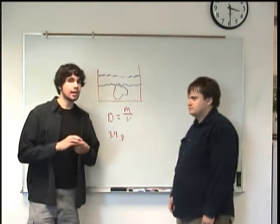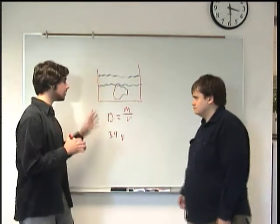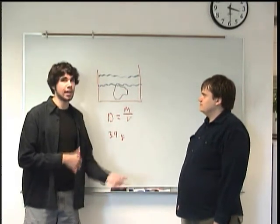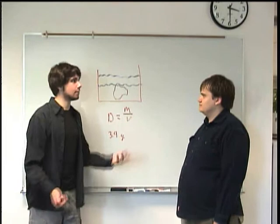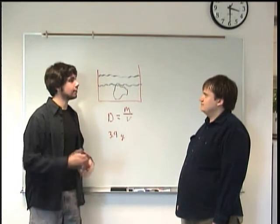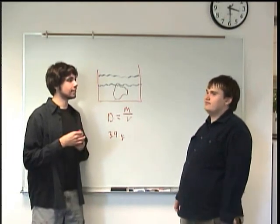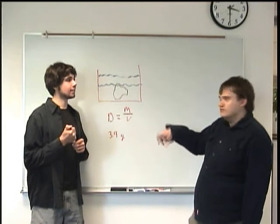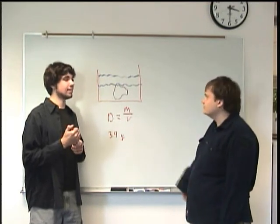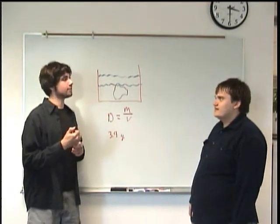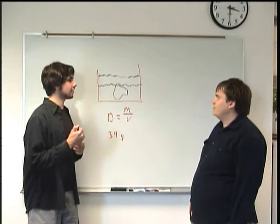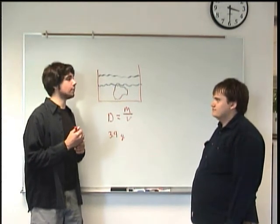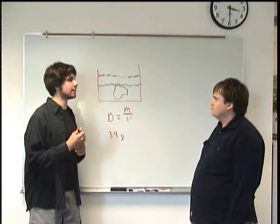Now, how would you get the volume? I mean, it's a lump of coal — it's solid. We can't pour liquid out of it and see how much liquid was in there. You'd have to take a ruler and measure all the little bumps and things — that'd be kind of hard to do. So how would you find that volume? Well, there's this cool term we used earlier in the video: displacement.